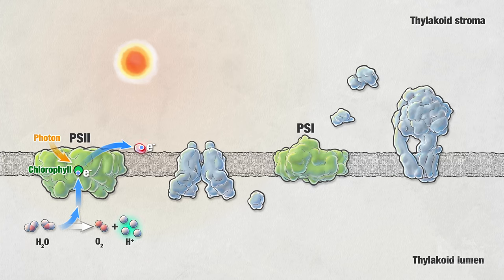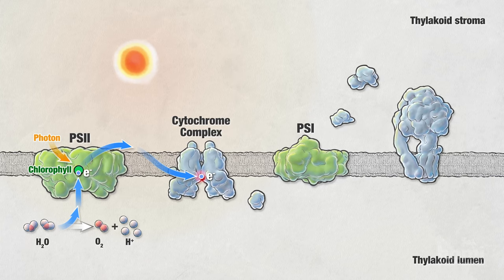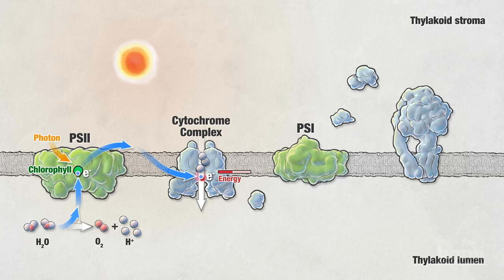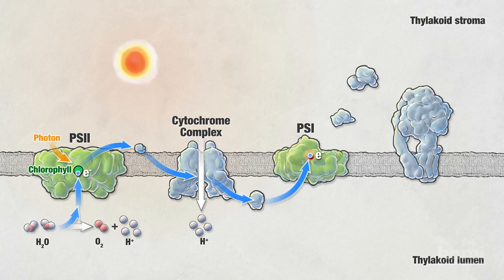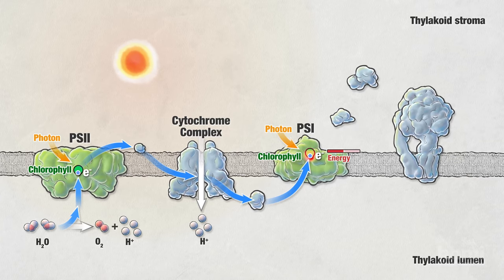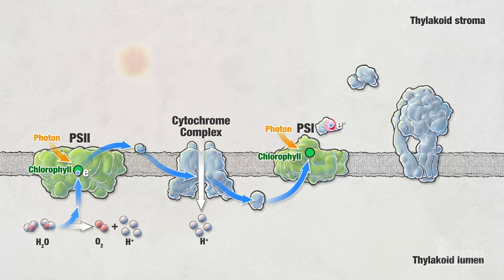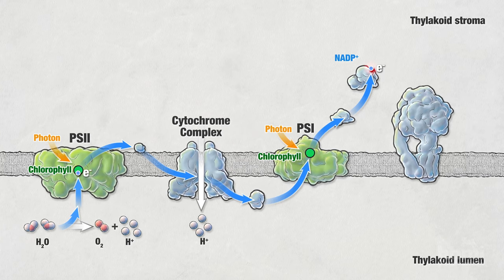The other products are protons, or hydrogen ions, which are released into the inside of the thylakoid, or lumen. The excited electrons move to the cytochrome complex. Some of the energy from the electrons is used by the cytochrome complex to transport additional protons into the lumen. The second electron carrier, a protein inside the lumen, receives the electrons and passes them to photosystem I. These electrons have now lost most of the energy they gained from light in photosystem II. Photons of light hit chlorophyll in photosystem I and excite the electrons again. The electrons are then passed to the third electron carrier. Finally, these electrons are either recycled or they interact with an enzyme and NADP+, the final electron acceptor of the light reactions, to form NADPH.